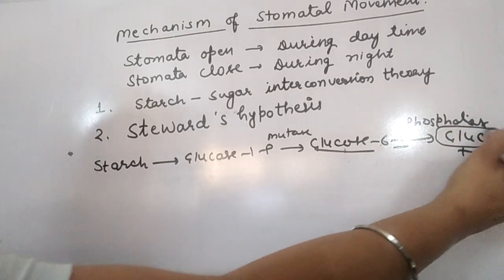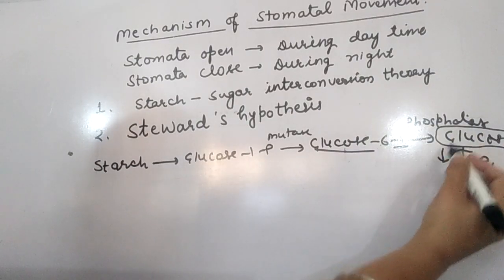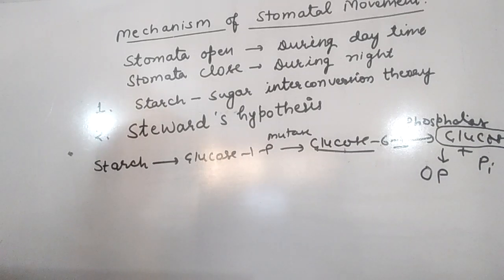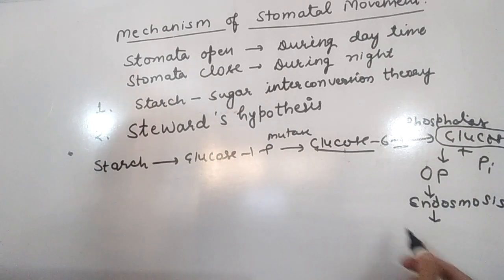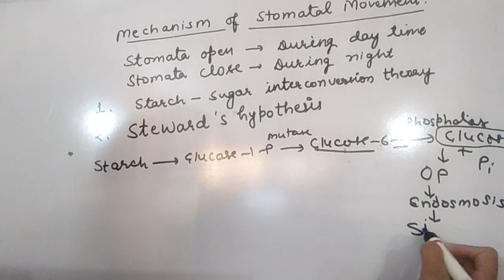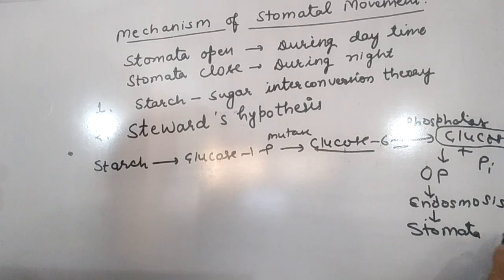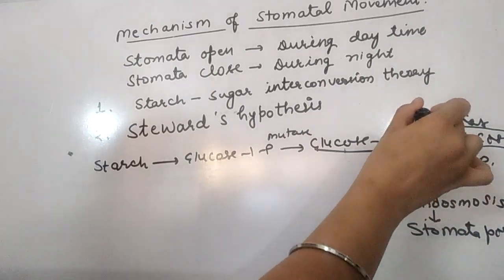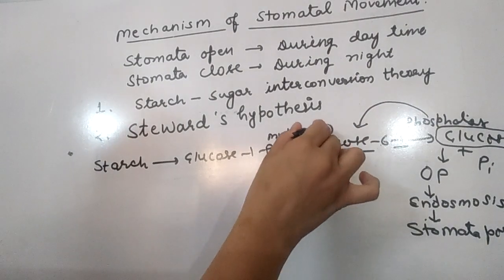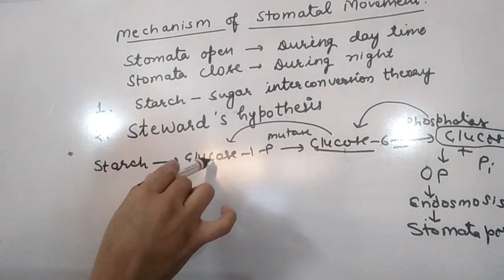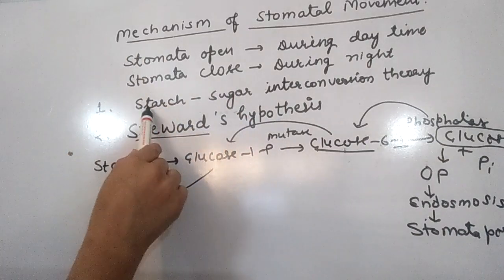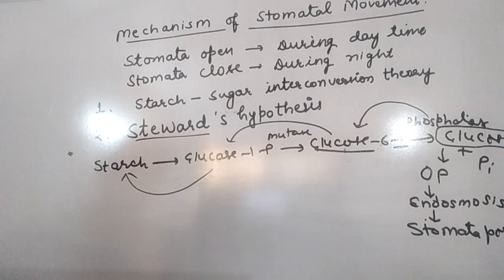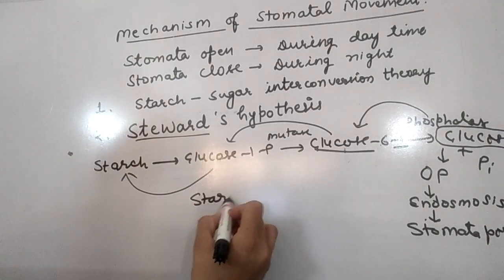Phosphatase enzyme removes the phosphate group, releasing inorganic phosphate as a by-product. The glucose formed in the guard cell raises the osmotic pressure of the guard cell. As a result, endosmosis happens, the guard cell becomes turgid, and the stomatal pore opens. During night, glucose converts back into glucose-6-phosphate, which then converts back into starch.